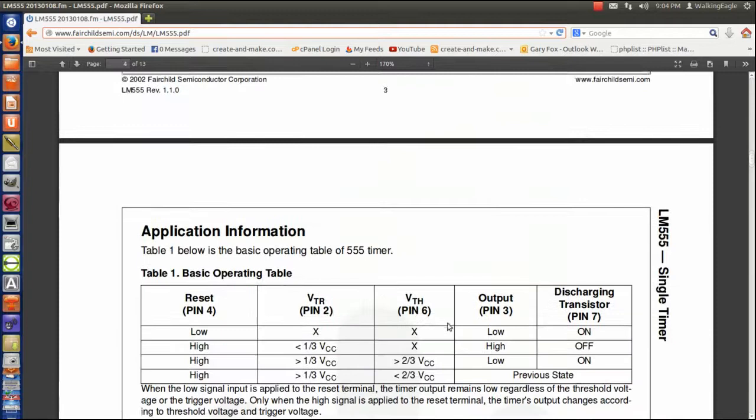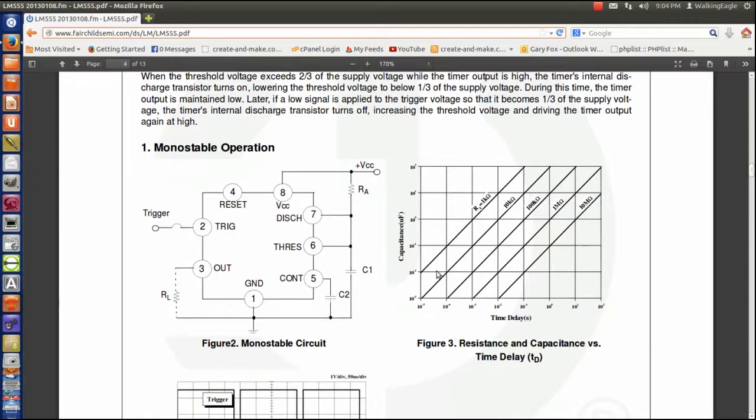We are going to go down here to the monostable circuit again. You see this time I blew it up a little more, so it should be a little bit easier for all of us to read. That discharge circuit on this one is connected to the threshold point, which remember I said is compared to the control voltage.